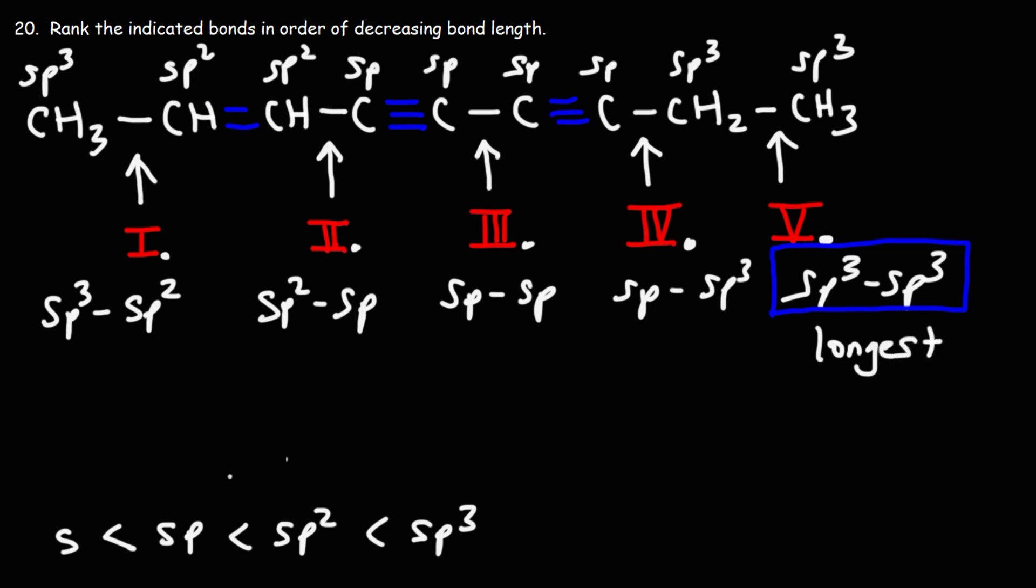So we don't have s, so we don't have to worry about that. sp, that's going to be the shortest. So we want to rank this in order of decreasing bond length. So we want to go from the longest to the shortest. So the longest is bond number five.